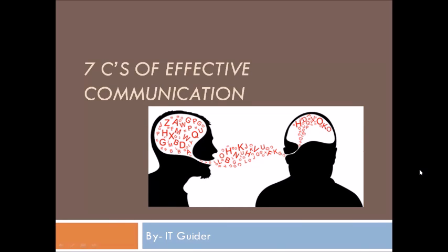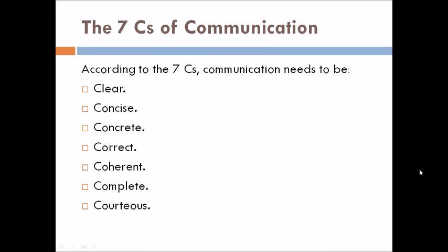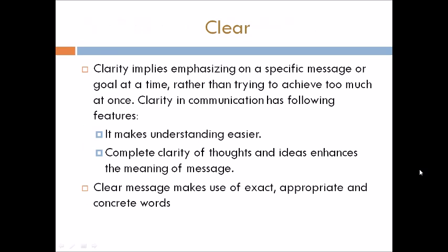The Seven C's provide a checklist for making sure that your meetings, emails, conference calls, reports, and presentations are well-structured and clear, so your audience gets the message. These are the Seven C's: Clear, Concise, Concrete, Correct, Coherent, Complete, and Courteous.